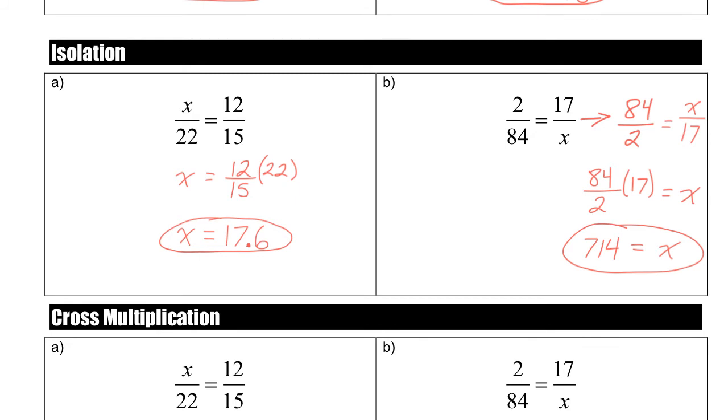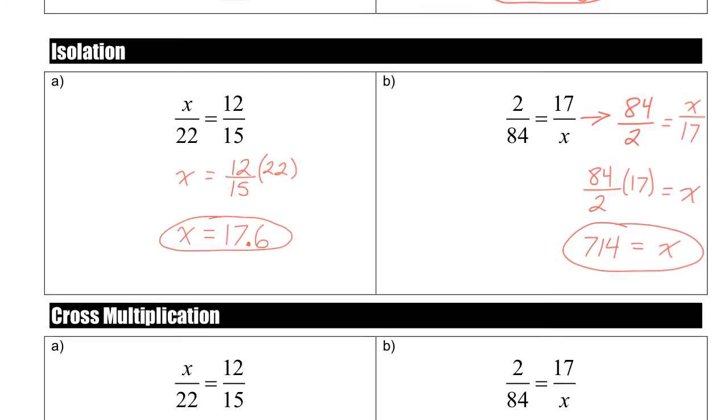Now, a lot of people don't really like solving with isolation because, yeah, it's really easy when the unknown, when your variable is on the top of the fraction. But if the variable is on the bottom of the fraction, a lot of people get messed up here and they forget to flip the fractions around so that it's on the top and then they end up getting the wrong answer. So what most people prefer, and this is what I usually do, is cross multiplication.